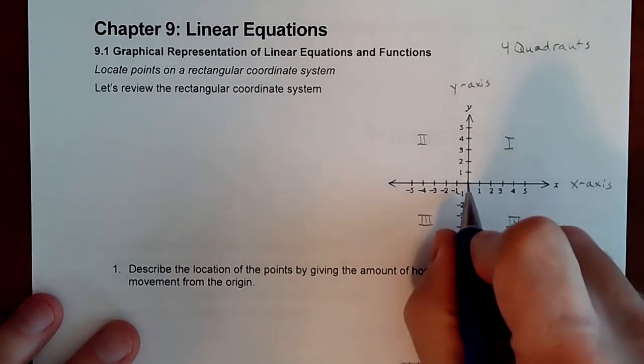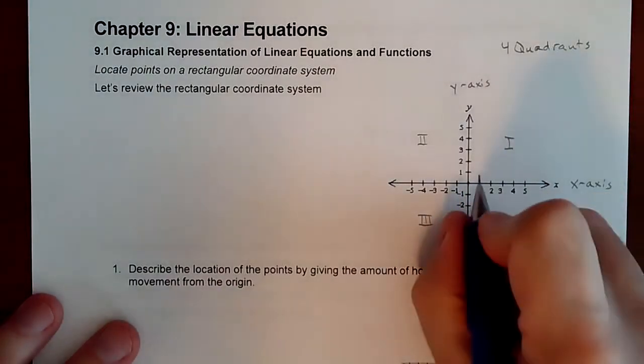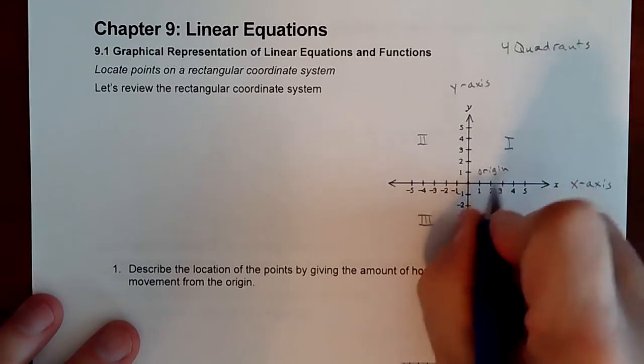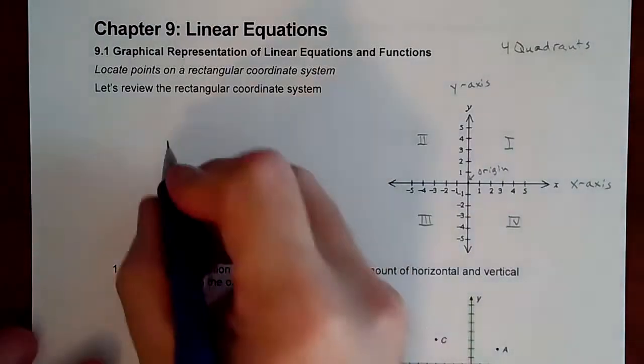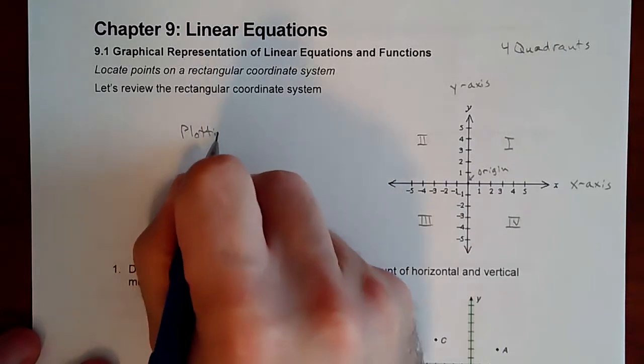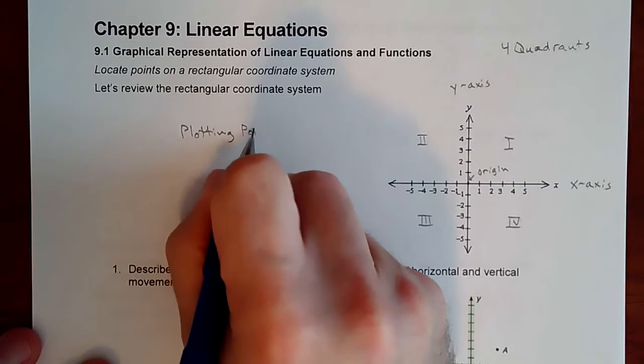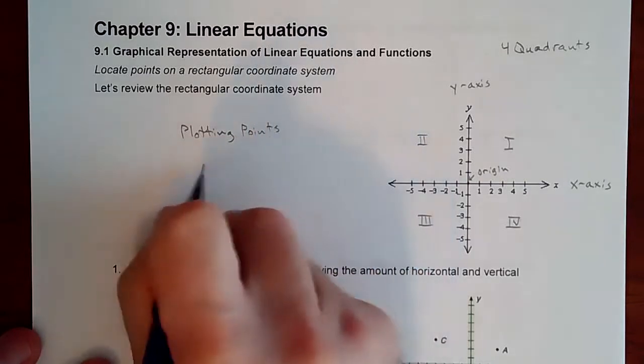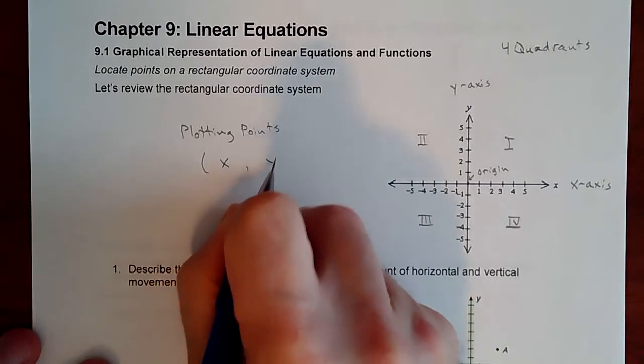This value right here in the middle, where these two axes cross, is known as the origin. So when we plot points, everything's going to build from the origin.